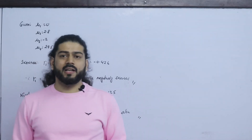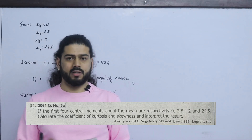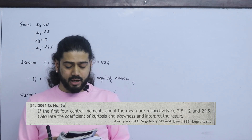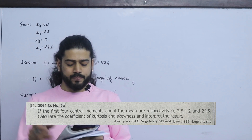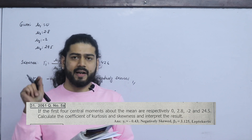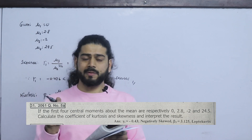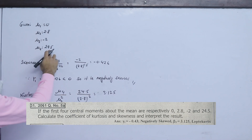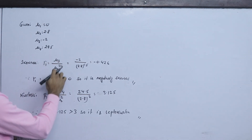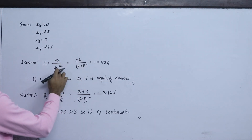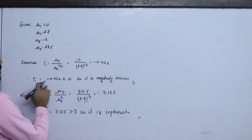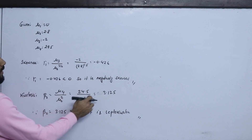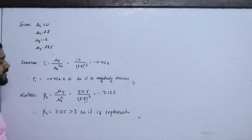Another question: if the first four central moments about the mean are respectively 0, 2.8, −2, and 24.5, calculate the coefficient of kurtosis and skewness and interpret the result. So: μ1 = 0, μ2 = 2.8, μ3 = −2, μ4 = 24.5. Gamma 1 = μ3 / μ2^(3/2) = −2 / (2.8^1.5) ≈ −0.426. Since γ1 < 0, it is negatively skewed. Kurtosis: β2 = μ4 / μ2² = 24.5 / (2.8²) ≈ 3.125. So β2 > 3 — leptokurtic.